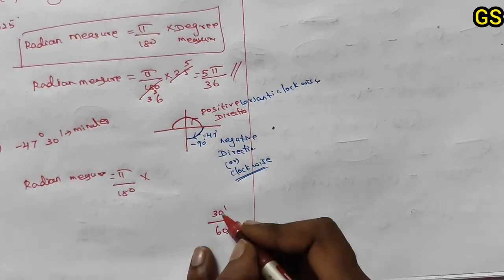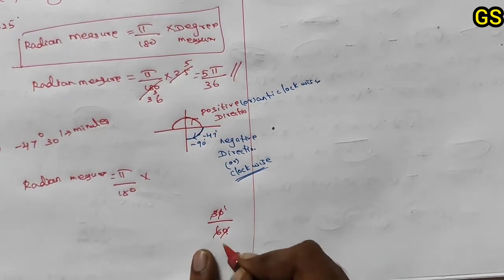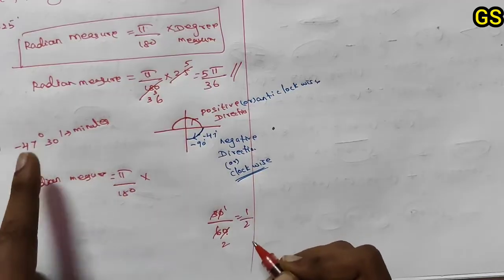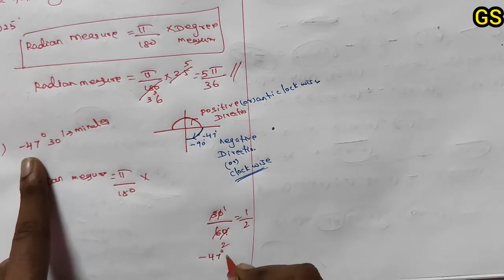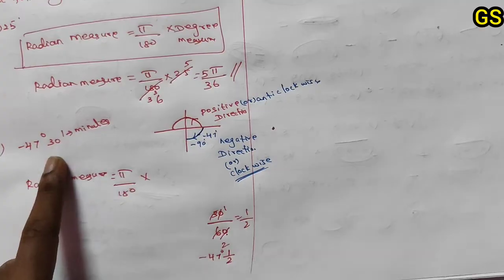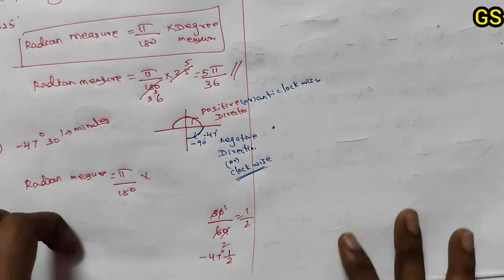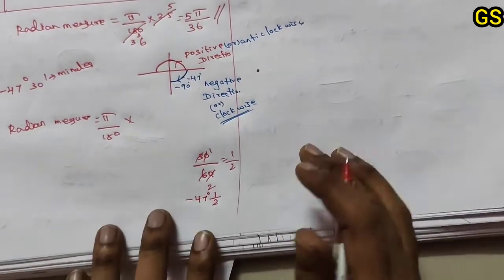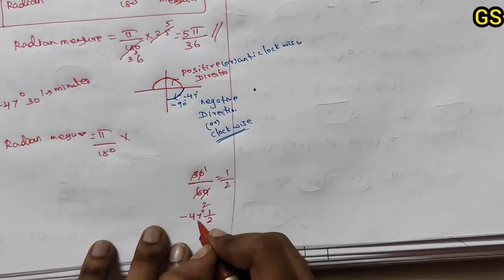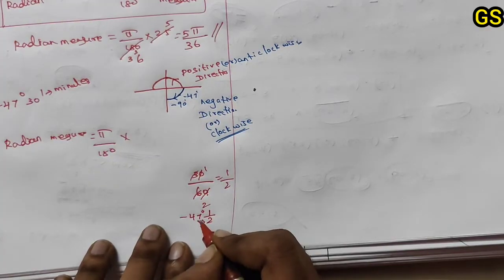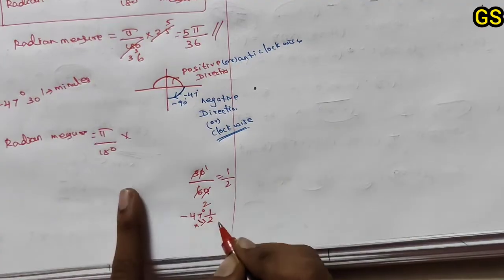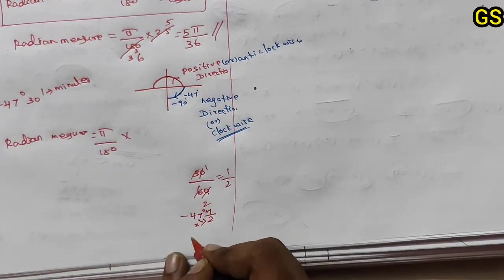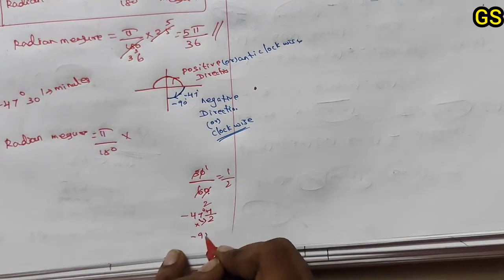30 minutes divided by 60 gives 1 by 2. So minus 47 degrees and 1 by 2 — this is a mixed fraction. The number is 47 and 1/2, which equals 95 by 2. So the degree value is minus 95 by 2.